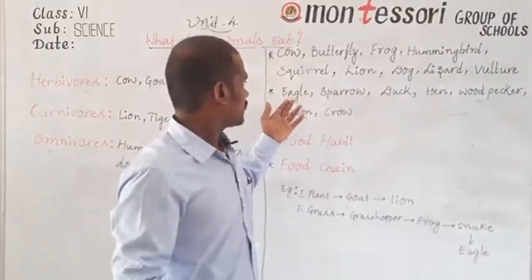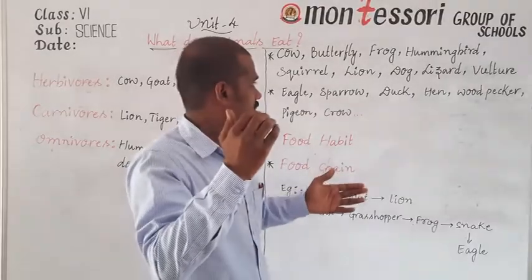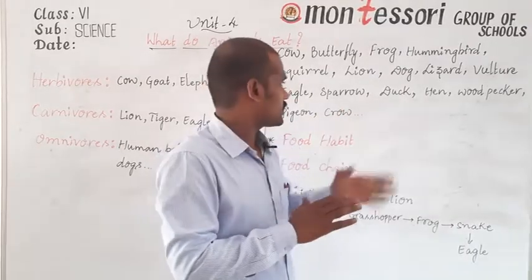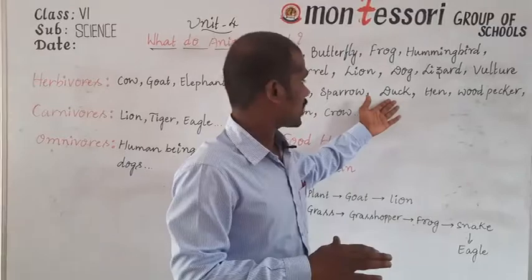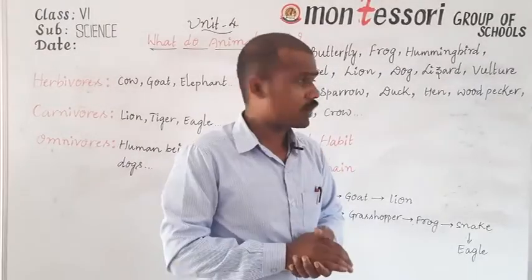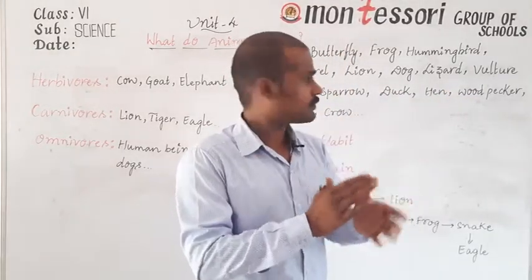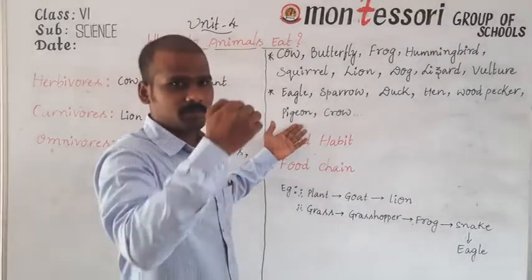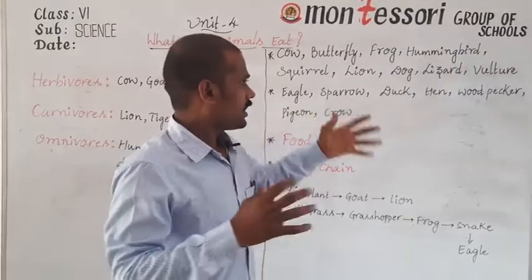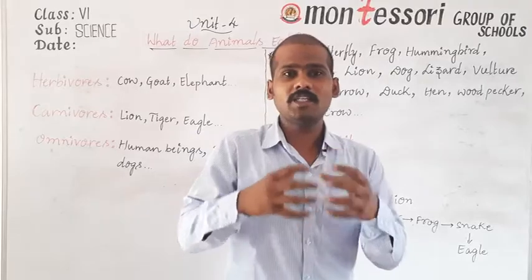Eagle is a carnivore and has a hooked beak. Sparrow is an omnivore and also has a small, hooked beak. Duck has a very narrow beak and is an omnivore. Hen is also an omnivore with a hooked beak and also uses its claws. Woodpecker has a very strong and long beak. Pigeon and crow also have hooked beaks. Different birds have different shapes of beaks which help them eat their different types of food.